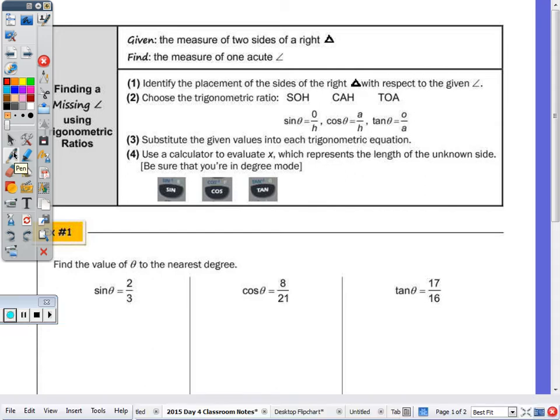Today's notes: we're going to be given the measure of two sides of a right triangle, and we're going to find the measure of the angle. Step number one is the same as last class. You're going to identify the placement of your sides. Do you have the side opposite or adjacent and the hypotenuse according to the angle? Use the appropriate trig ratio and then substitute in the equation. You're going to evaluate, which we need to change that side to angle. We're now looking for the angle.